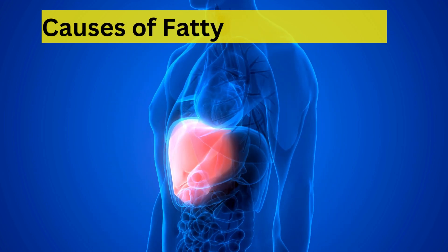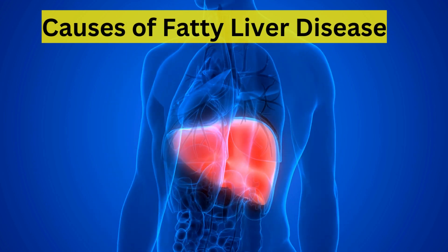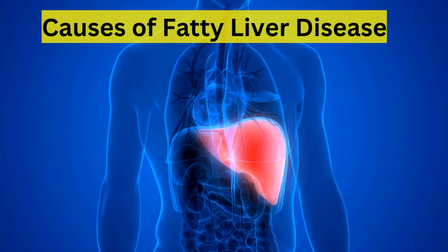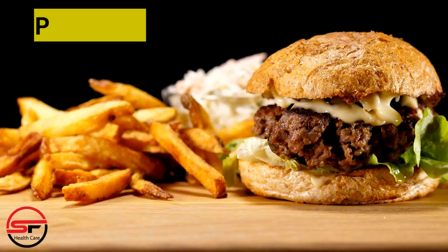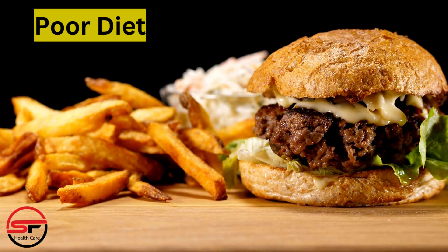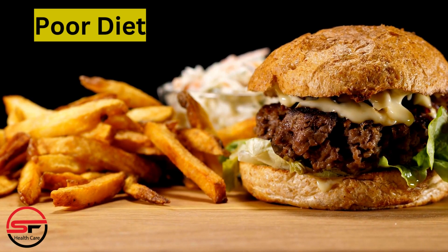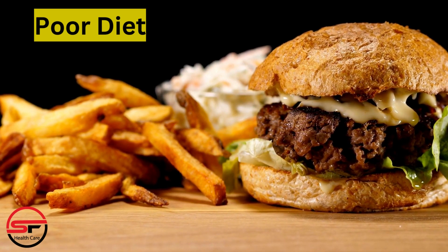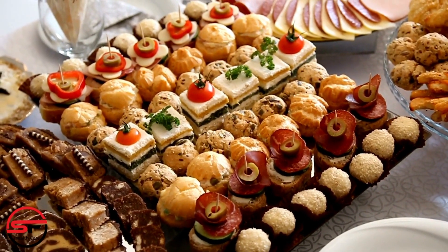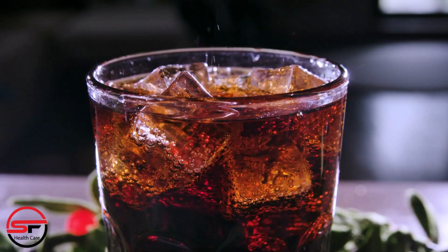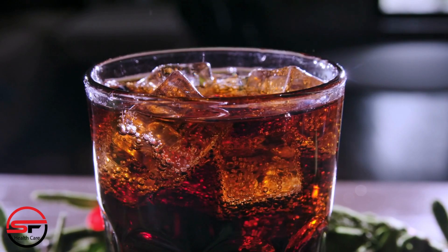Now let's move on to causes of fatty liver disease. Fatty liver disease can result from lifestyle factors such as poor diet. Consuming excess unhealthy foods, especially those high in sugars, refined carbohydrates, and saturated fats, can lead to fat accumulation in the liver. Skipping meals, excessive snacking, and overall irregular eating patterns can contribute to the development of fatty liver disease. Sugary beverages and fast food are common culprits.